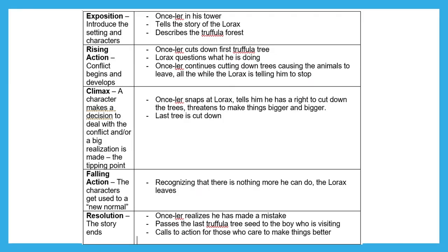If we take the events of this plot and lay them out in the outline you'll use to pre-write your allegory, here's what it looks like. In the exposition, we begin with the Onceler in his tower — he begins to tell the story of the Lorax and sets up the setting by describing the Truffula forest. Then in the rising action, the Onceler cuts down the first Truffula tree, drawing the Lorax out to question what he is doing.